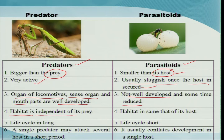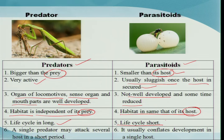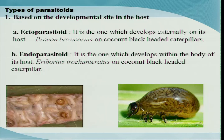The habitat of a predator is independent of its prey — it lives elsewhere and comes to feed when hungry. Whereas in parasitoids, being constantly associated with the host, the habitat remains the same. The predator's life cycle is longer, whereas the parasitoid's life cycle must be shorter because it has to complete development before the completion of a particular stage of the host. A single predator may attack several individuals in a short period, whereas a parasitoid usually develops on a single host.